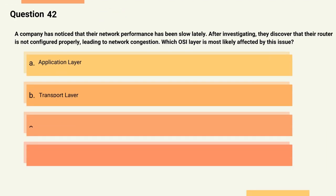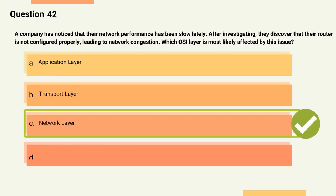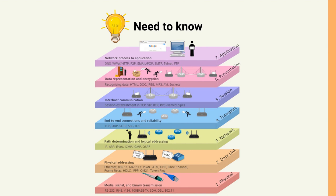Question 42: A company has noticed that their network performance has been slow. After investigating, they discover that their router is not configured properly, leading to network congestion. Which OSI layer is most likely affected? Options: A) Application layer, B) Transport layer, C) Network layer, D) Data link layer. The correct answer is Option C, Network layer. Explanation: The network layer deals with routing and logical addressing, which is crucial for efficient data transmission and avoiding network congestion.